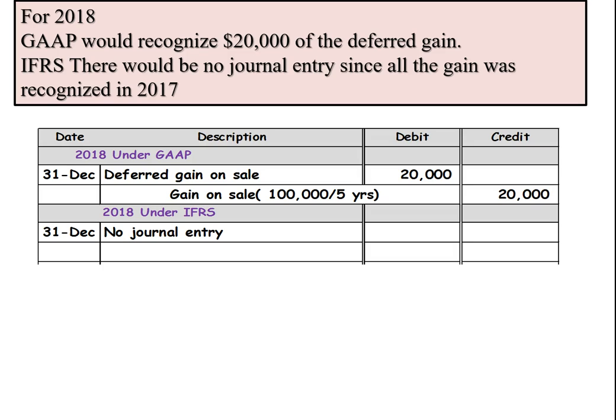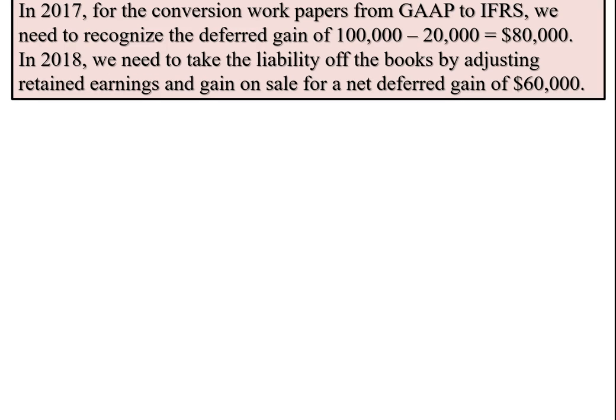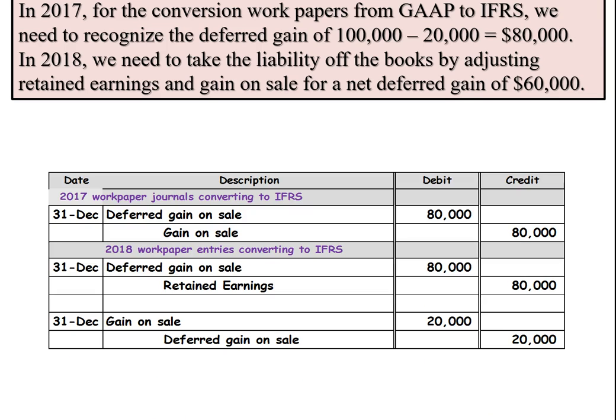Now we're going to look at the working papers. In 2017, for the conversion work paper from GAAP to the international standard, we need to recognize the deferred gain, which is the difference between the $100,000 and the amount already recognized under GAAP, so it's $80,000. That's the $100,000 minus the $20,000 recognized under GAAP at the end of the year. We take the balance liability of $80,000 off the books and record it as a gain on sale of $80,000.